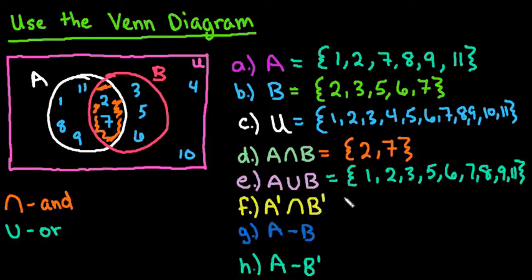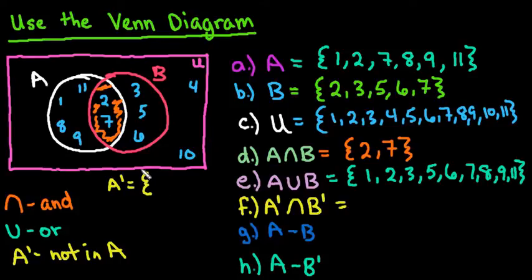For the next one, we are looking for NOT in A and NOT in B. Remember that this is read as NOT in A. So if you wanted to, what you could do is you could find NOT A, all of the values that are NOT in A. So all of these numbers here are in A. So the ones that are NOT are 3, 4, 5, 6, and 10.